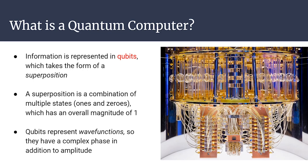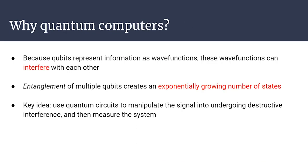The picture on the right of that slide is the quantum computer that IBM built. Why do we want to use quantum computers? The fact that they represent information as wave functions means those wave functions can interfere with each other. Because of the quantum property of entanglement, multiple qubits are all connected — you can't affect one without affecting all of them. We want to take advantage of wave interference: destructive interference makes many possible outcomes go to zero, leaving only the outcome we want.